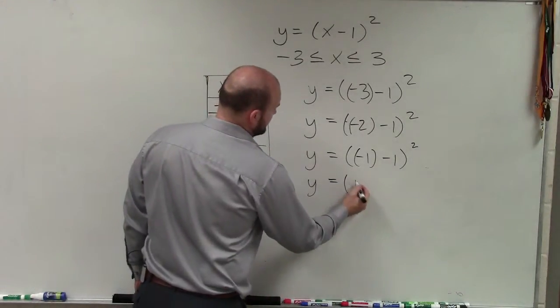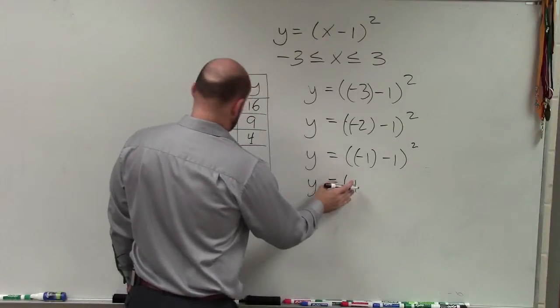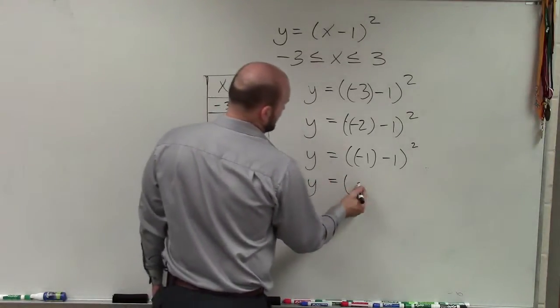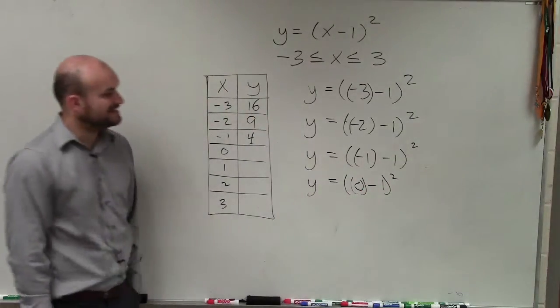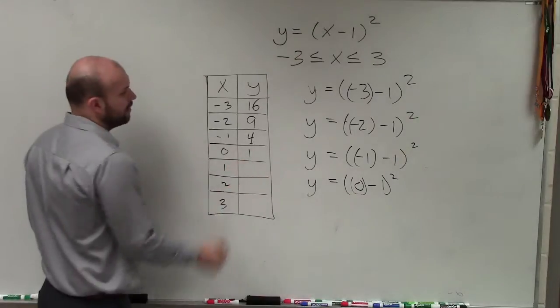Now let's do 0. 0 minus 1 squared. 0 minus 1 is negative 1. Negative 1 squared is positive 1.